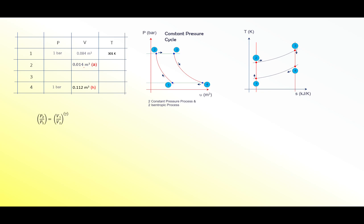Now we are on the way to find P2. From the isentropic equation between pressure and volume — P times V to the power of gamma — we know P1 is 100 kPa, V1 over V2 (the compression ratio) is 6, and gamma is 1.4. So P2 equals 1229 kilonewtons per metre squared, or 12.29 bar. Put P2 as 12.29 bar into the table.